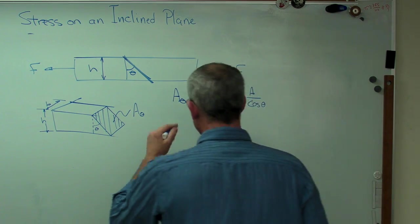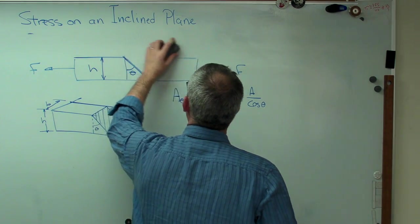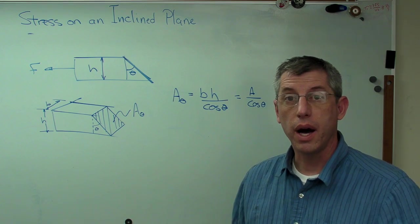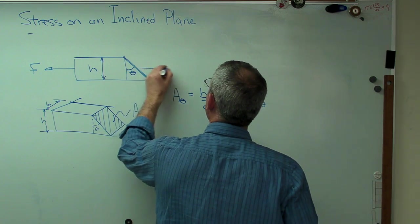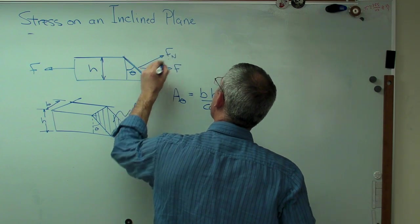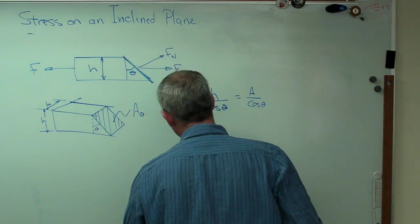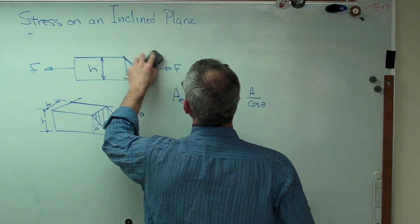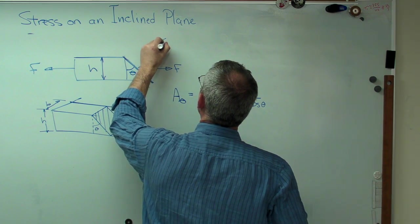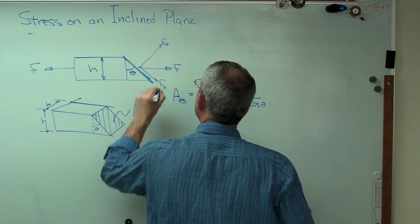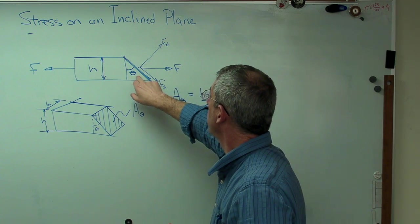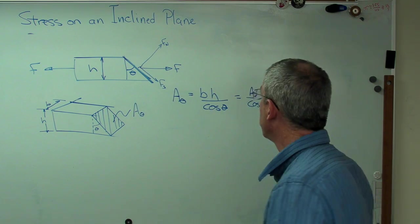Now the other thing I want to know is what are the forces acting on that face, that angled face. Well, I've got a force. I know it acts this way. And that's going to be F. I'm going to call that F normal. That's not very perpendicular, is it? Let's try this again. There. F normal and F shear. Those are just the vector components of this. So if I know what theta is, I'm going to know what those two are.